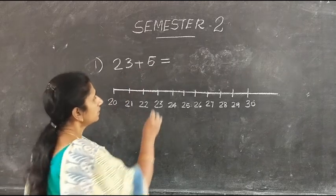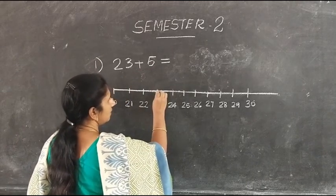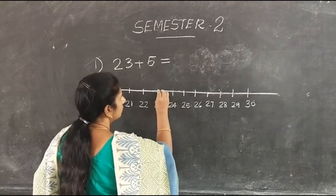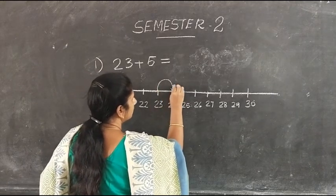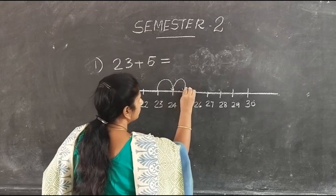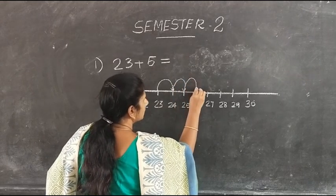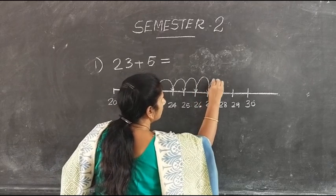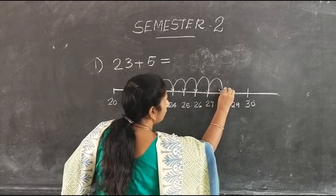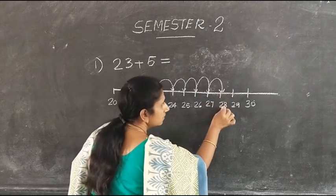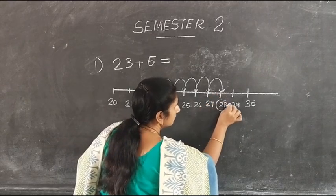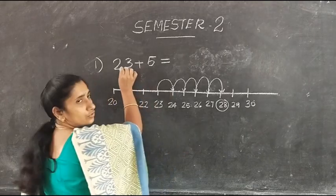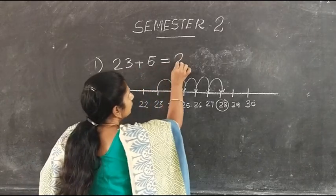So we have to start from 23 and take 5 small jumps in the forward direction. 1, 2, 3, 4, 5. Now we reached 28. So our answer is 28. So 23 plus 5 is equal to 28.